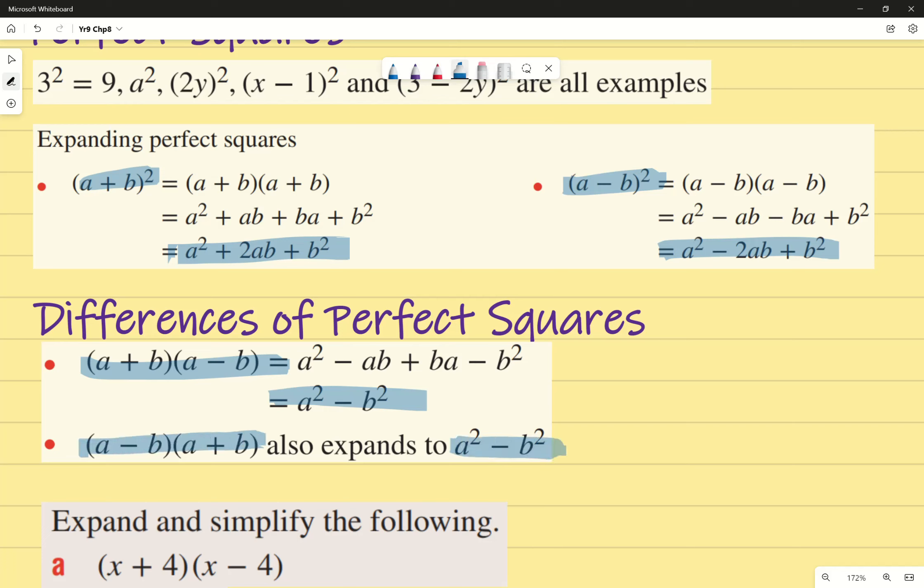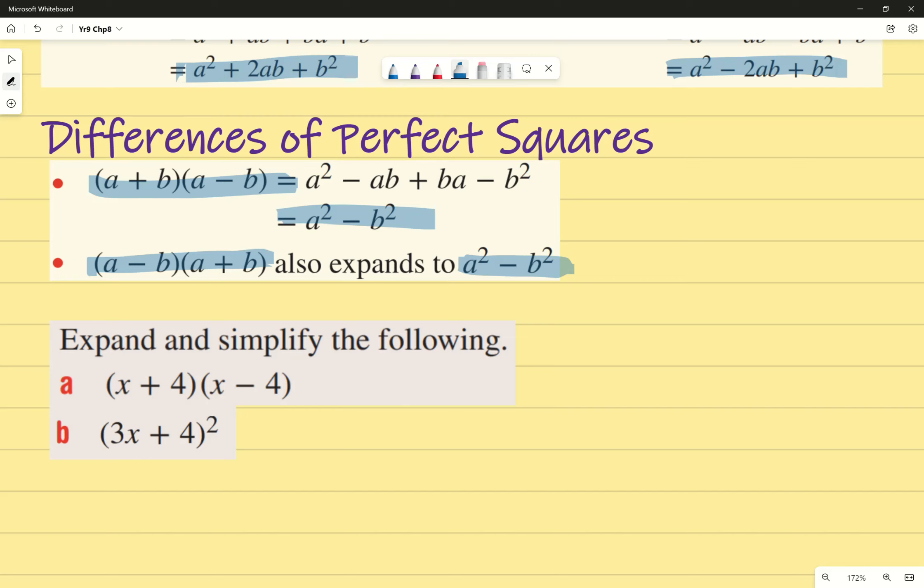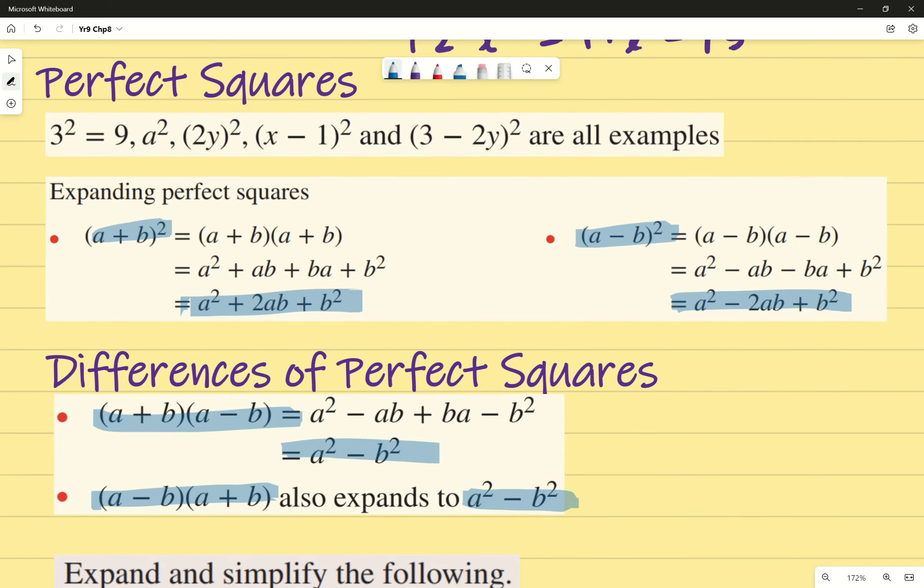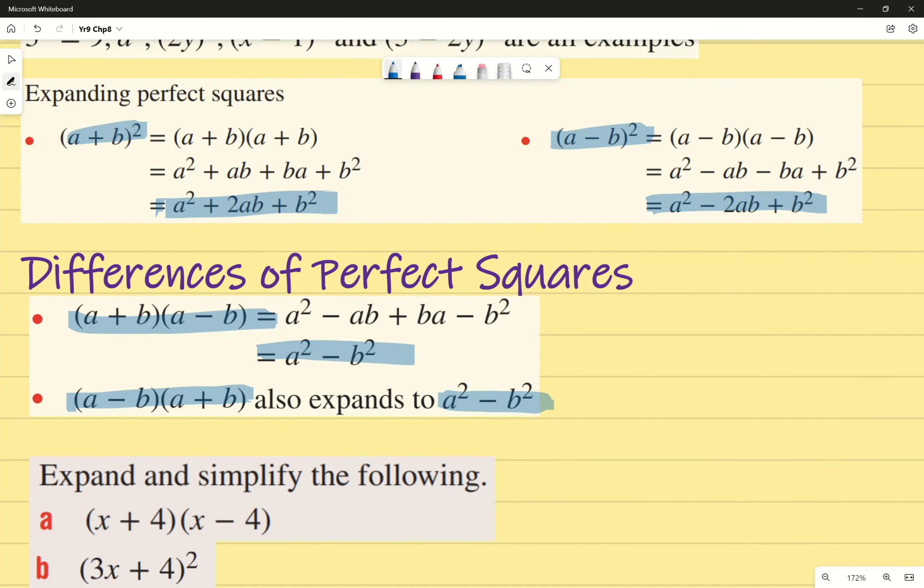The same concept is over here - you can see it's the same formula, we're just switching around the other way. They're both valid. Any questions about that? Expand and simplify the following: (x + 4)(x - 4). Again, if you were to just identify based on formula, which one would it be? Would it be a difference of perfect squares, or would it be a perfect square from expanding perfect squares above? Which formula would it be if I've got one that's positive, one that's negative?